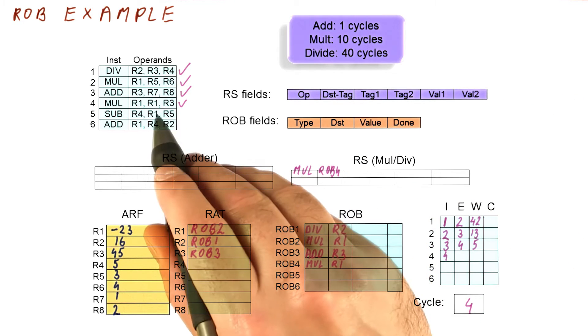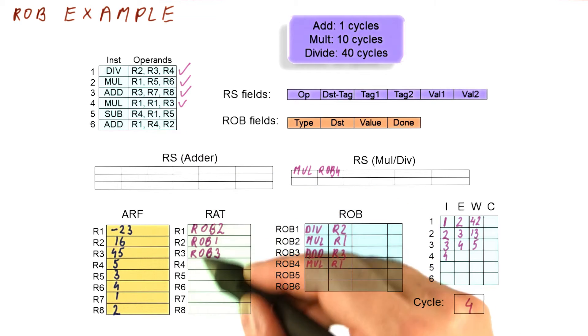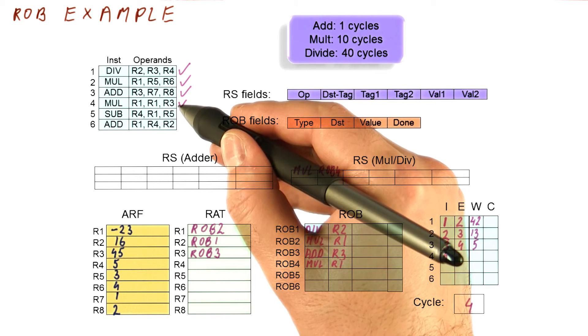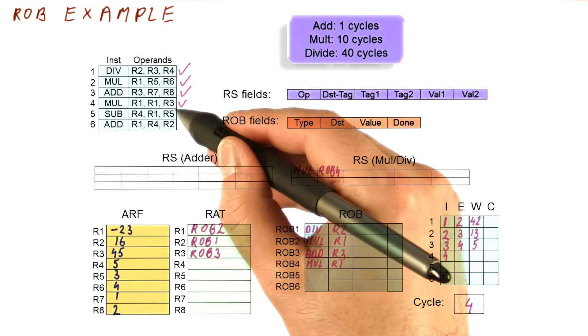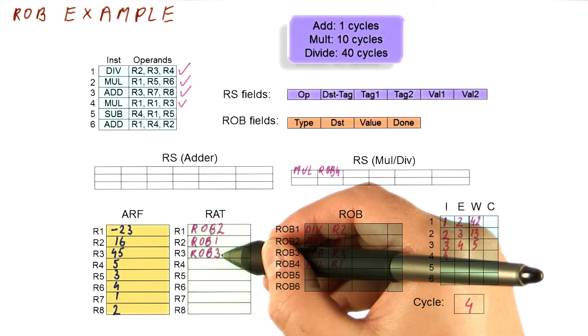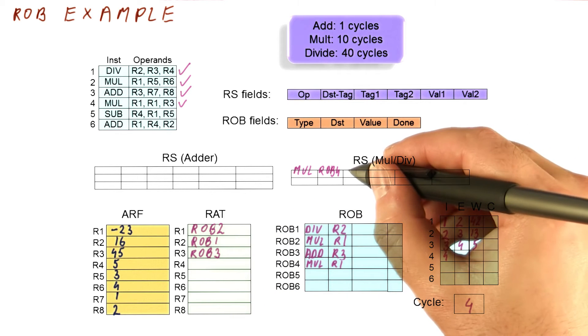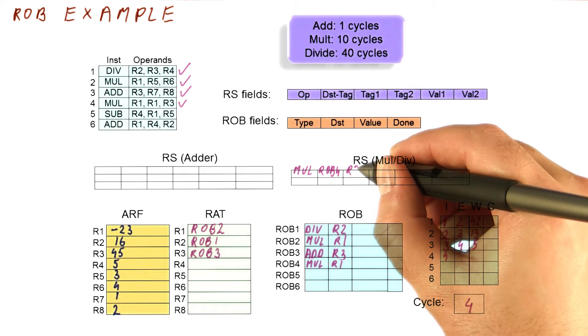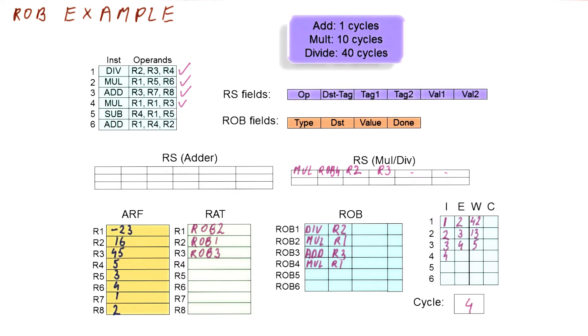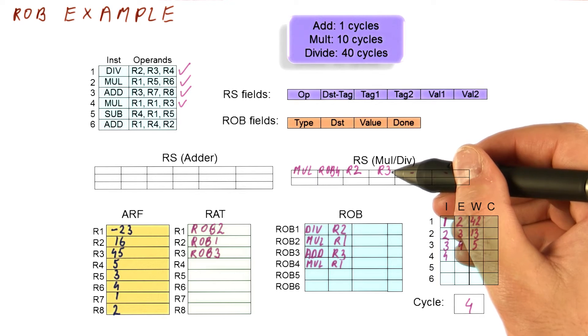Now what we do is, for this instruction, we're going to look at the RAT before we update it to see where do we find our registers that we're going to use as inputs. We are using r1 and r3, r1 and r3 map to rob2 and rob3. So we actually mark here rob2 and rob3, and we don't have values yet. So this instruction actually will have to wait.